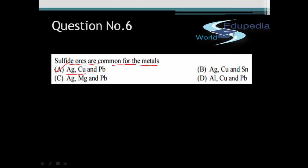the ores of all these three elements - Ag, Cu and Pb - always occur as sulfides. For example, the ore of Ag is Ag2S, which is also called Argentite. The ore of Cu is Cu2S called copper glance, or another ore is CuFeS2.